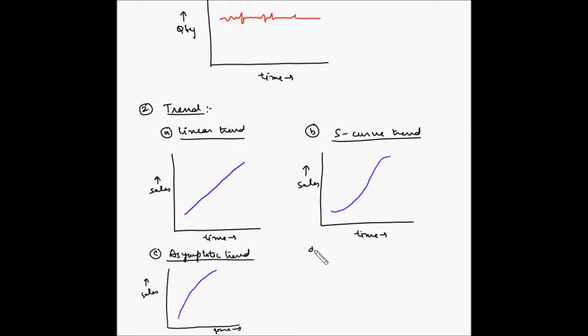The fourth trend is exponential trend. So let's draw the curve. This is time, sales, and the trend can be shown as this line here. An exponential trend is common in products with an explosive growth, such as new high technology products.